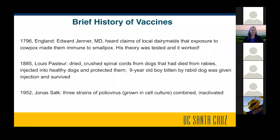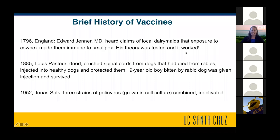We think of vaccines as modern technology, but the first vaccines were developed in the 1700s. There was a doctor, Edward Jenner, who heard claims that local dairy maids who were often exposed to cowpox were immune to smallpox. His theory was tested and formed the basis of the initial smallpox vaccines.